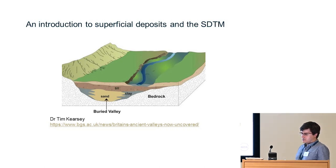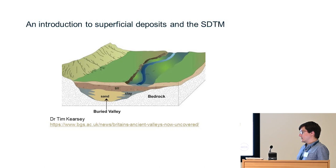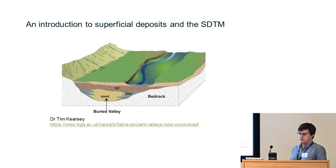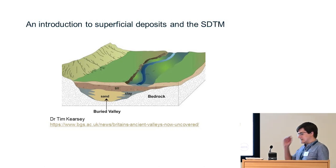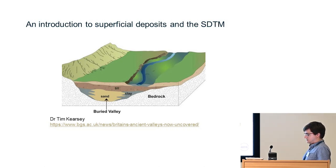Almost all of these deposits have been formally classified on the basis of origin — so you might see them as glacial deposits, river terrace deposits, or blown sand — or on their composition, such as peat, in some other BGS products. The Superficial Deposit Thickness Model takes data from boreholes and uses mathematical techniques to produce a map of UK superficial deposit thickness at various resolutions.